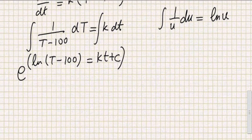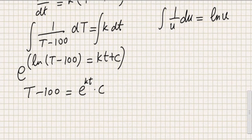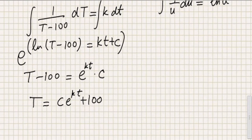Now I make all of this equation a power of the exponential function e. On the left-hand side I'm left with T minus 100 — I've explained this step in previous videos in this playlist, so please go back and watch those if needed. On the right-hand side I get e to the power kt times a constant of integration C. So then I write T equals C·e^(kt) plus 100. When we reach this point, we have the general solution.